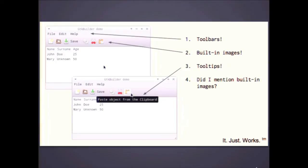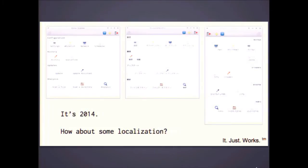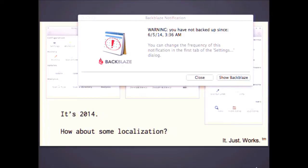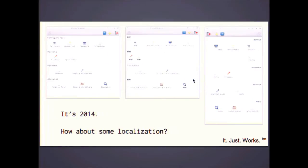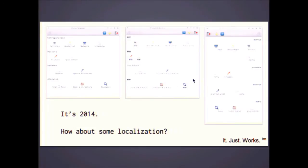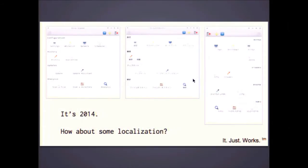We also have toolbars we can design. We have built-in images and stock icons we can use, and tooltips - even better. These are good stock icons we can use. What about localization? You have not backed up for a while - I'm just going to close that for now. But yeah, this stuff just works. This is a real Perl GTK project out there with all the language files you can use with it, and it just works, it just displays. You do need translators for the content, but the framework handles it.